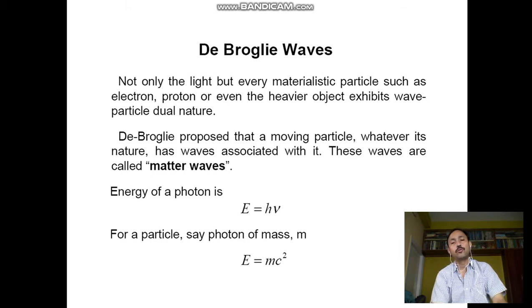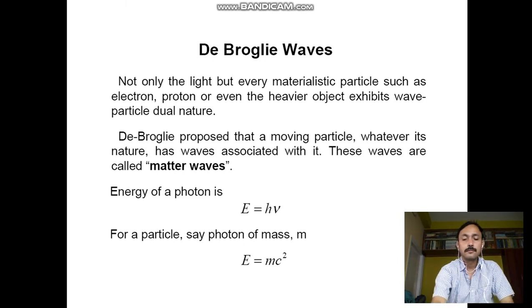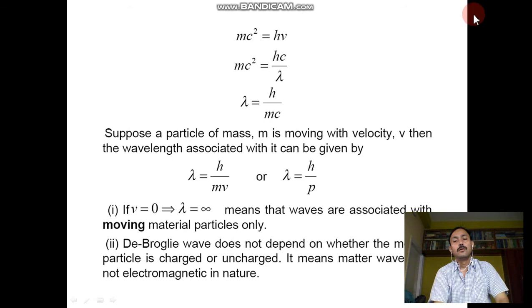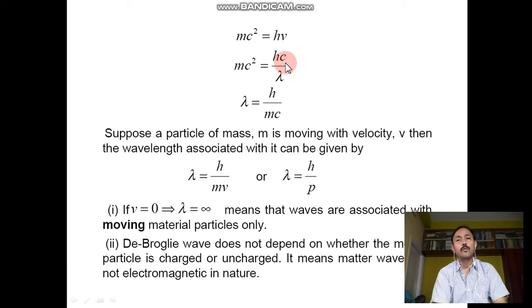The energy of the photon is E = hν, where h is Planck's constant with value 6.64 × 10⁻³⁴ joule·second, and ν is the frequency of radiation. For a particle — say a photon of mass m — energy becomes E = mc² as per Einstein's mass-energy relation. So E = mc² and E = hν gives mc² = hν. Since ν = c/λ, cancelling c, we get λ = h/mc.